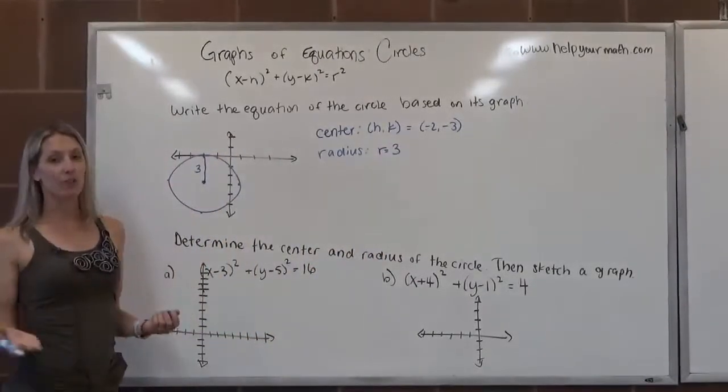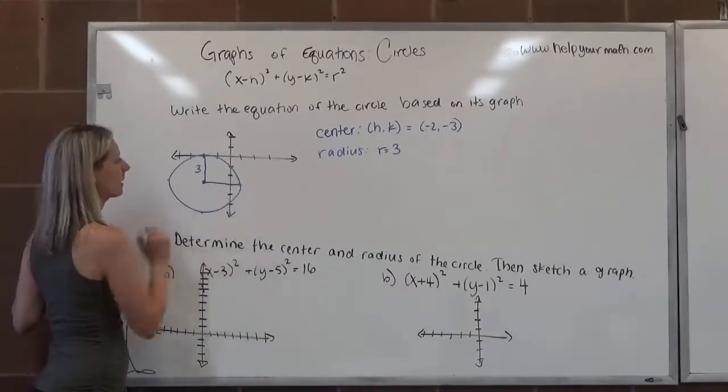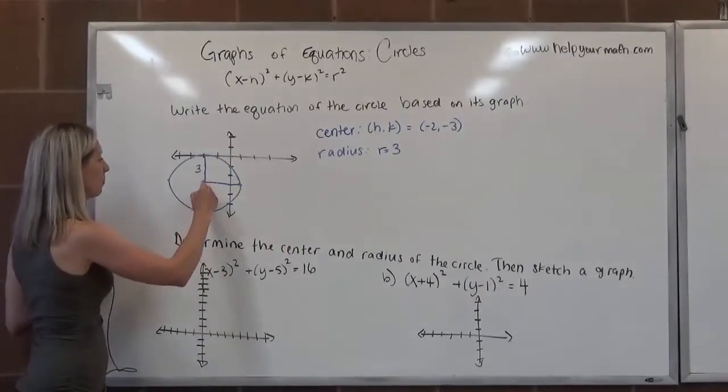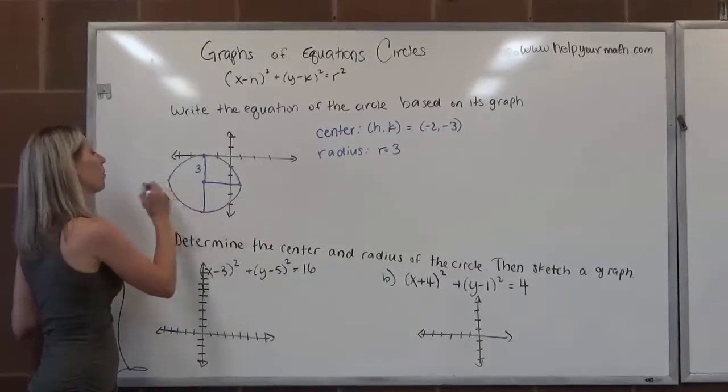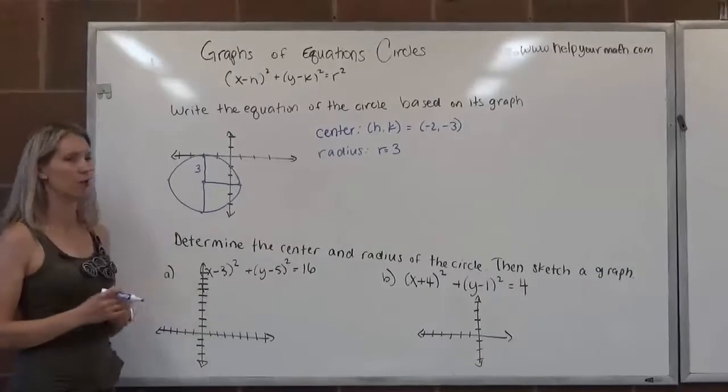I should be able to do that in any direction and get a radius of 3. So I should be able to go this way, 1, 2, 3, and it should also match, which it does. I could go down 1, 2, 3, or I could go left, but the point is the radius is 3. So from here to any point on the circle, it's a length of 3.